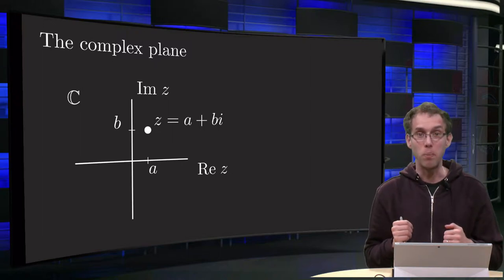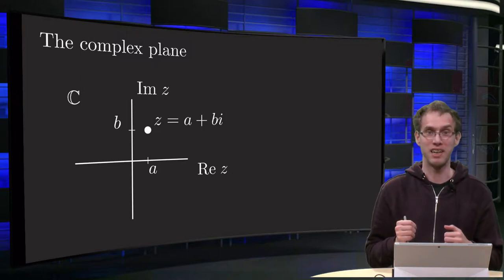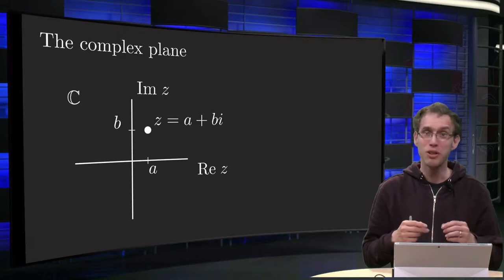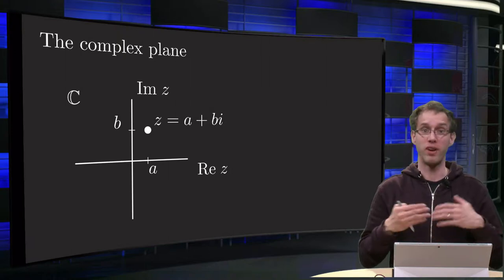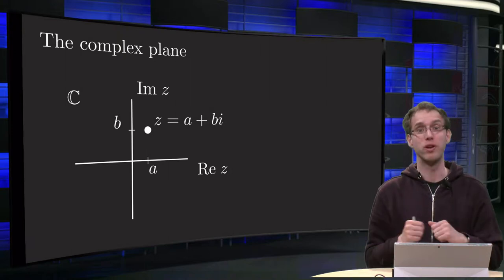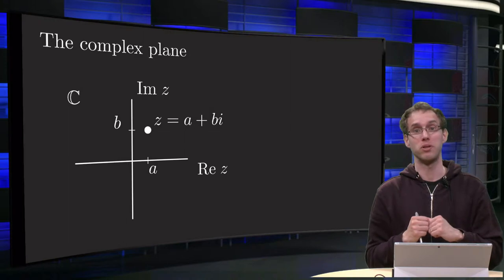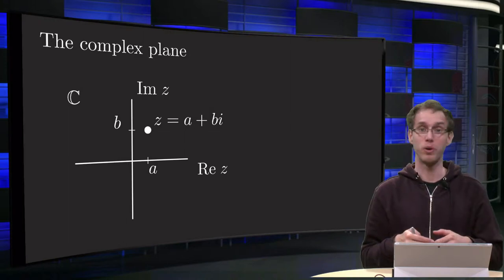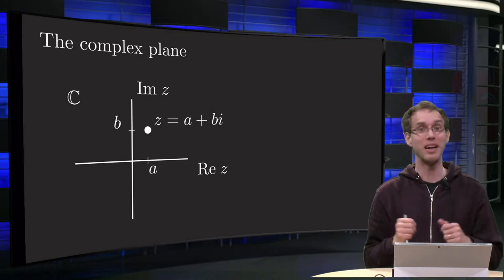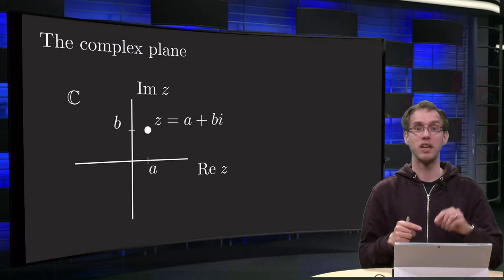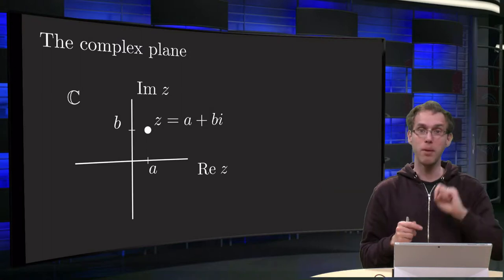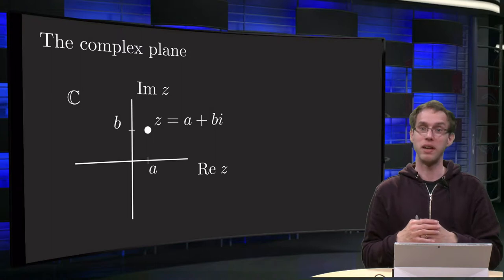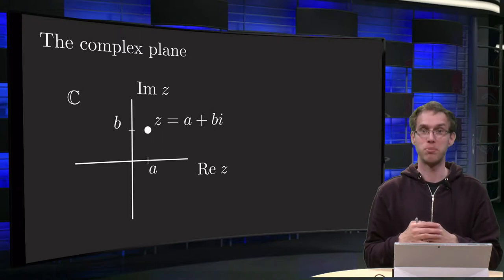How can we depict a complex number graphically? For the real numbers we can use the number line, but we have no room for the complex numbers on this line anymore. So how do we solve this? We use two lines, one for the real part and one for the imaginary part, which means that we will get a plane — the complex plane.